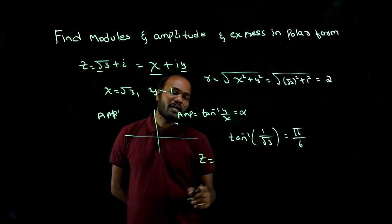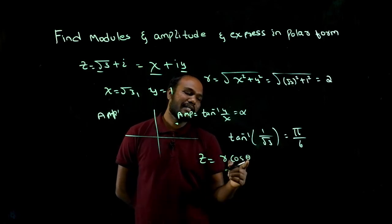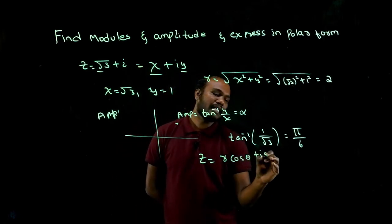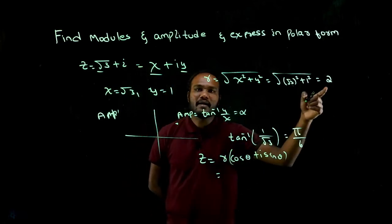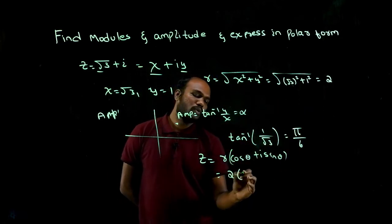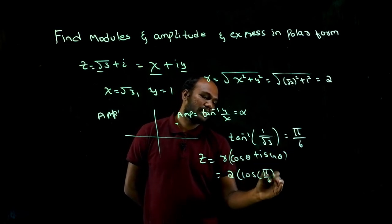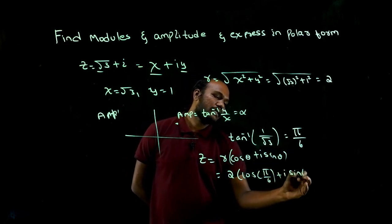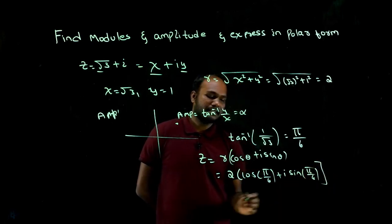The polar form is z equals r into cos θ plus i sin θ. This is the polar form. r is 2, so it's 2 times cos of θ, which is π over 6, plus i sine θ, which is π over 6. Is that good?